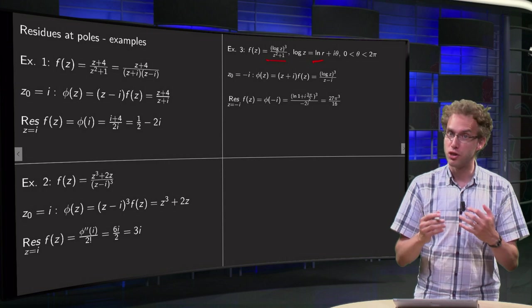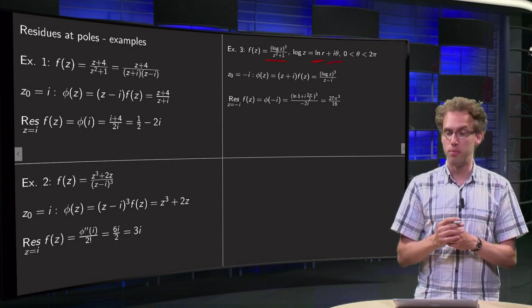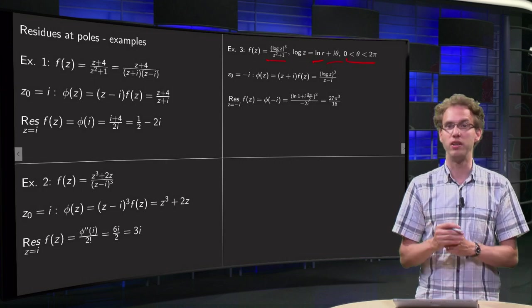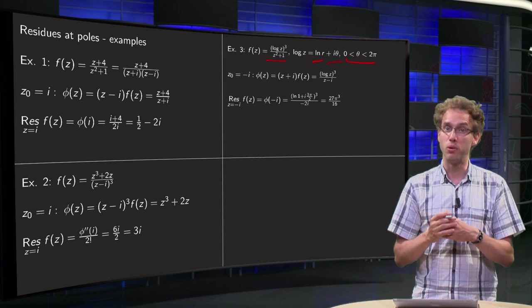That's the ln of r, where r is the norm, plus i times theta, where we choose the branch cut such that theta is between 0 and 2 pi. We choose the branch cut along the real axis.